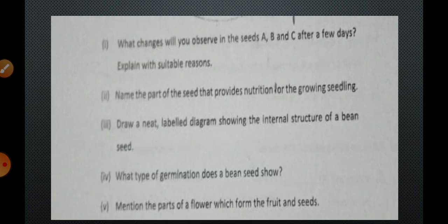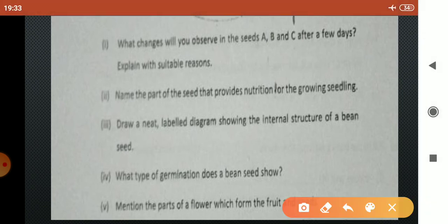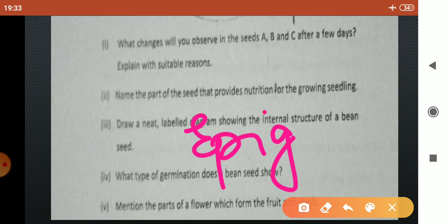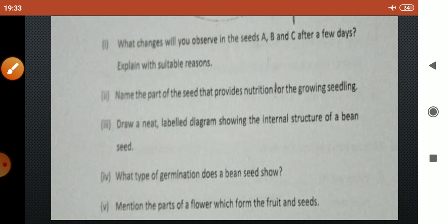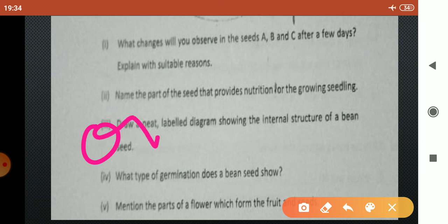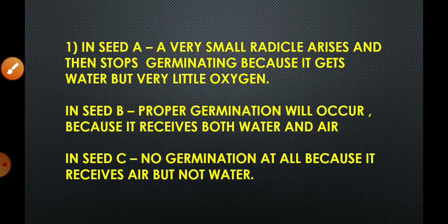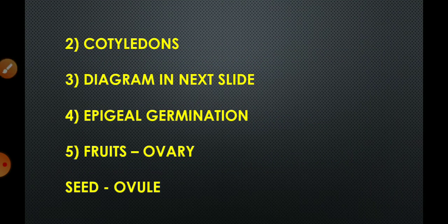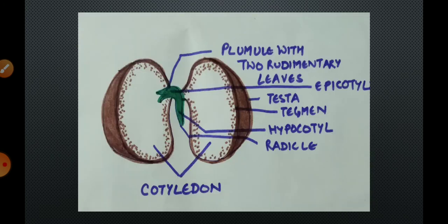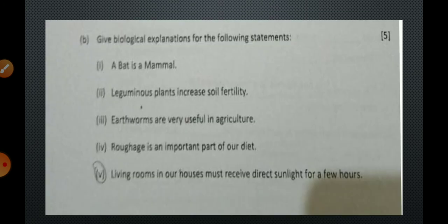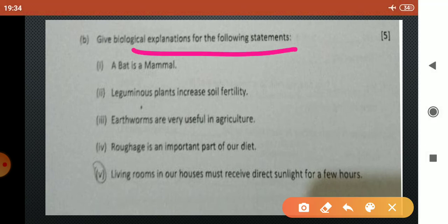What type of germination does a bean seed show? Bean seed shows epigeal germination. Epigeal germination means germination above the earth surface. The fifth question is mention the parts of a flower which form the fruit and seeds. Ovary present in the flower forms the fruit whereas the ovule present in the flower forms the seed.